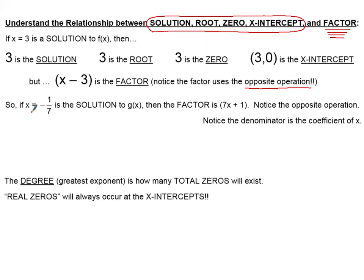Another example: if X equals negative 1/7 is a solution, then the factor will be 7X plus 1. Notice the opposite operation — because we had a negative solution, we'll have a positive sign in our factor. Also notice that the denominator of our fraction is the coefficient of the X. Two other notes: the degree, that's the greatest exponent, is how many total zeros will exist. And if you have any real zeros, you will always find those at the X-intercepts.